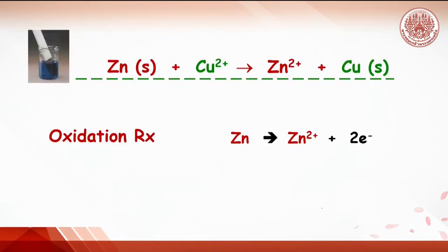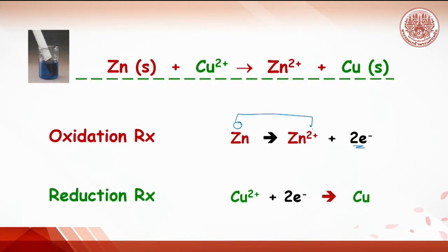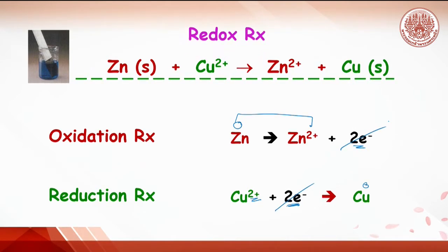The redox reaction can consist of two half cells. In the oxidation half cell of zinc, zinc loses its electron and the oxidation number changes from zero to plus two. Therefore, the oxidation reaction means the reaction where the starting material increases its oxidation number. In the reduction half cell, the oxidation number of copper decreases from plus two to zero due to gaining electron. When these two reactions are combined, electrons are crossed out and the redox reaction is obtained.